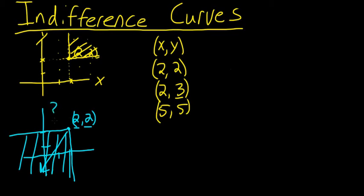So the question that becomes more difficult is the two quadrants that are left. We haven't said anything about the quadrant here or here. It doesn't fit into the category that is strictly better, and it doesn't fit into the category that's strictly worse. So whether or not bundles in these areas are better or worse is going to depend on our utility function. For the purposes of this example, let's say that our utility is equal to X times Y.